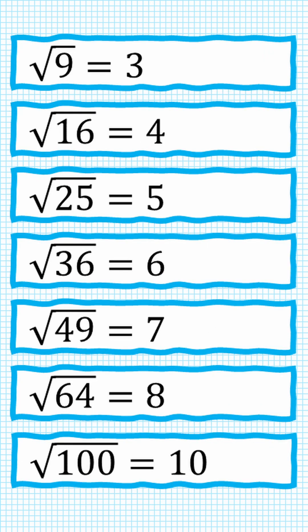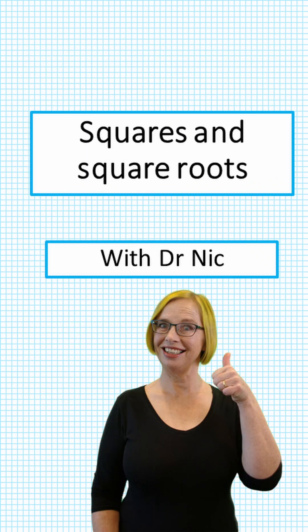And here are some square roots for you to look at. Square root of 9 is 3. Square root of 16 is 4, and so on. So that is what squares and square roots are.